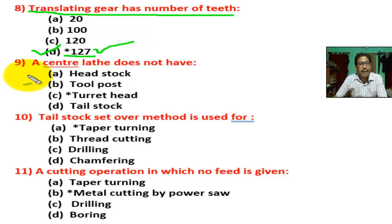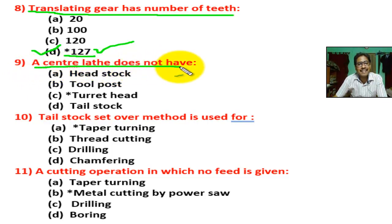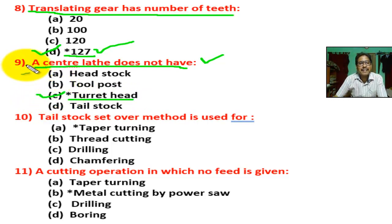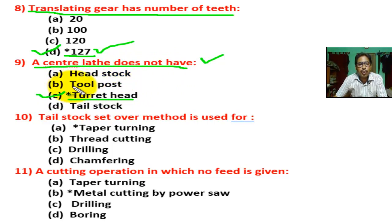Question number nine: a center lathe does not have a turret head. Center lathe has a headstock, tool post, and tailstock, but a turret head is not present in a center lathe.